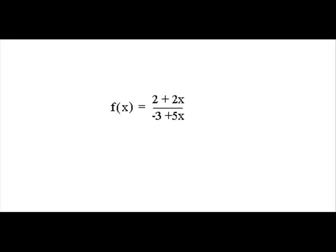So our first step is to take it out of function notation. Our first step is to write y is equal to 2 plus 2x over negative 3 plus 5x. This is nothing more than a simple rewrite. We just took out the f of x and just made it a y.